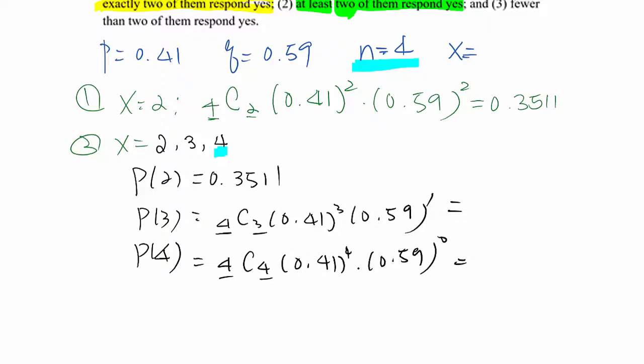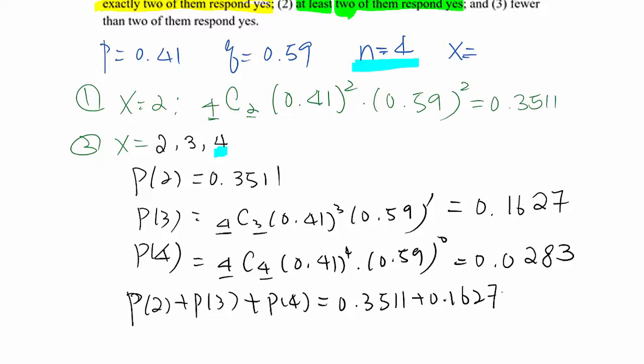If you calculate that, it becomes 0.1627 and 0.0283. So P(2) plus P(3) plus P(4) will be 0.3511 plus 0.1627 plus 0.0283, then the total becomes 0.5421. That will be the answer.